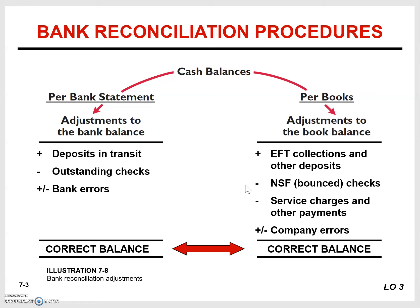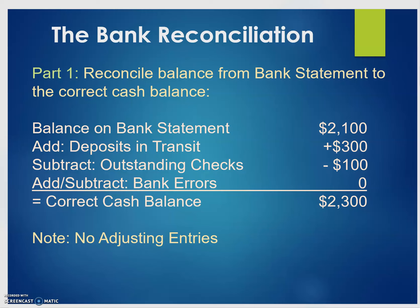You would also subtract out any non-sufficient funds — that's when you receive a check from a customer who doesn't have enough funds to cover the amount of the check, meaning you haven't really received the cash yet. You would also subtract out any bank service charges and other payments. If the company made any errors in recording their journal entries, you would add or subtract the company's errors to arrive at the correct balance.